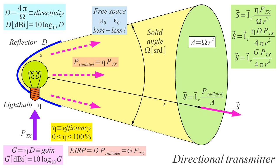I can make simple calculations here, just taking into account radiation. The directivity D is 4π divided by solid angle ω. The power density at the point of observation depends on the efficiency of the light bulb and the directivity of the reflector. It makes sense to combine these two into the quantity called gain — gain is simply efficiency times directivity. With antennas this is called gain. We express directivity and gain in decibels: 10 times log base 10 of D or G in linear units — these are dimensionless ratios.